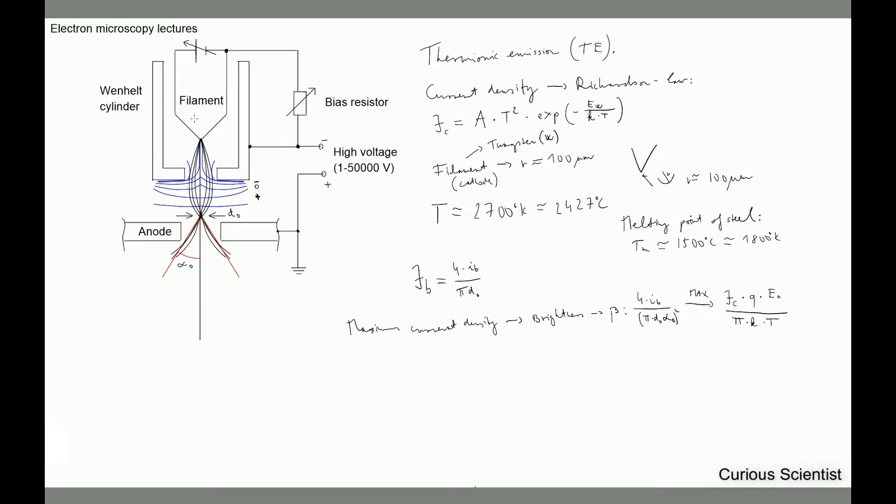We can alter the electrostatic field by changing the distance between the filament and the Wehnelt cylinder, and by changing the variable bias resistor. With these adjustments we can maximize β, the brightness, and find an optimal value. Not all devices allow changing the filament-to-cylinder distance, so that may not be an option, but manufacturers usually optimize this already.